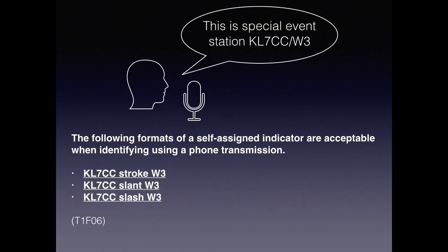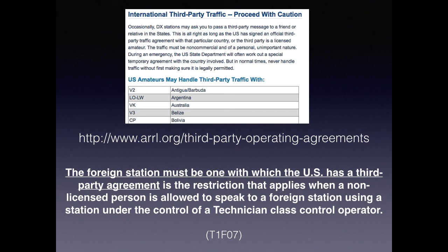At some point you may be asked to work a special event station — a lighthouse, a battle station, or some club event. You would use a self-assigned indicator, perhaps for log purposes, to identify who talked to whom. For example, KL7CC slash W3 — where the slash could also be called 'slant' or 'stroke.' The acceptable formats for a self-assigned indicator when identifying using a phone transmission are: KL7CC stroke W3, KL7CC slant W3, or KL7CC slash W3.